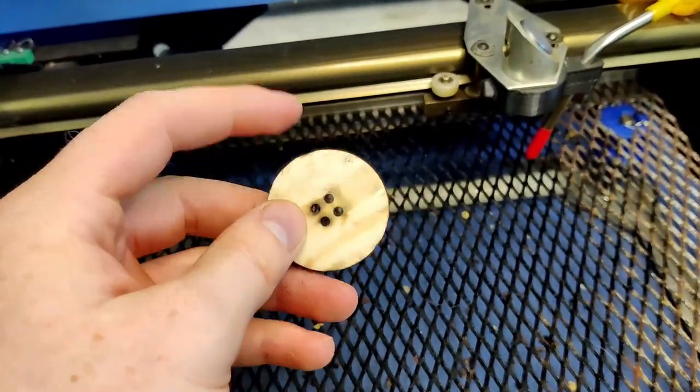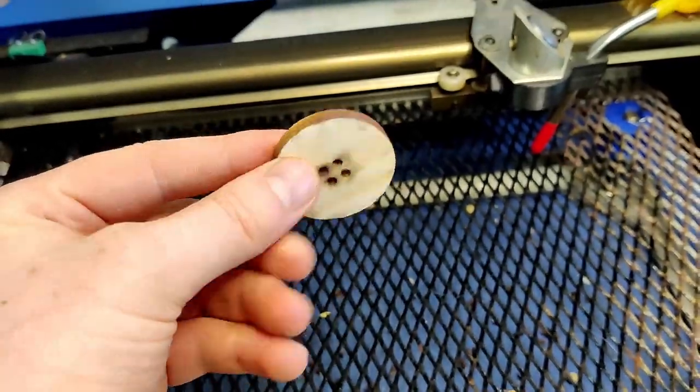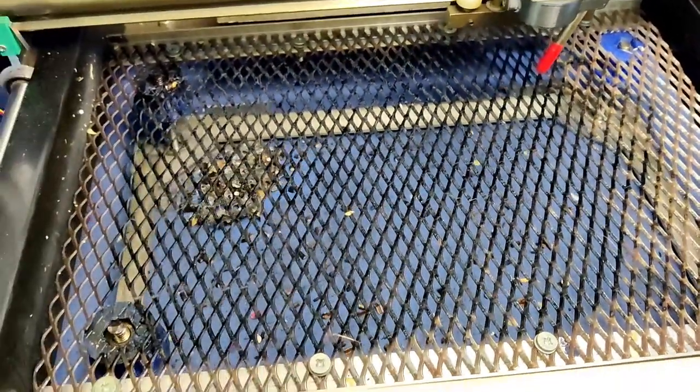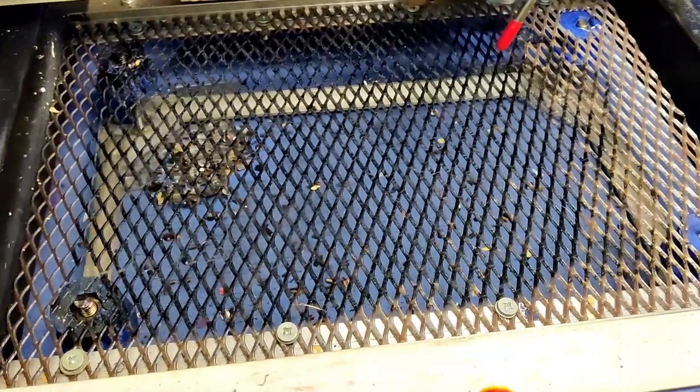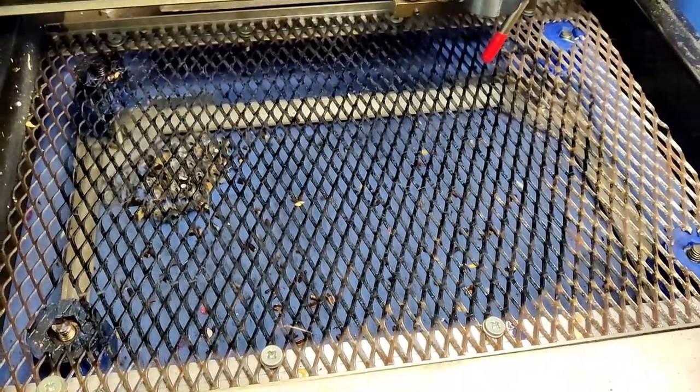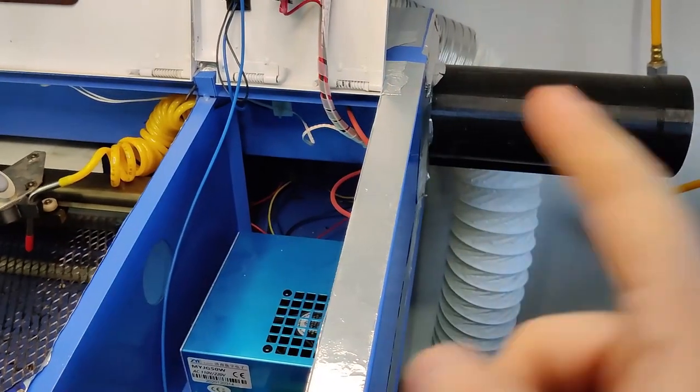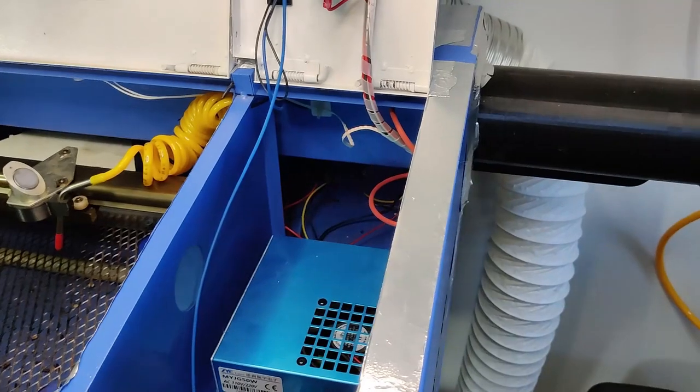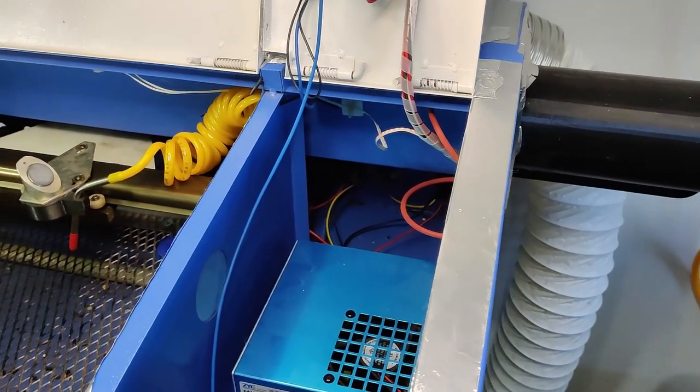What I've actually started doing now is putting masking tape on the top and bottom of my material just to reduce the burn marks which reduces the time in post-processing to get the material looking nice. Now I'm going to show you in a minute the biggest upgrade that I've probably made is the new laser tube. There's a funny story behind that which I'll tell you in a second as well.